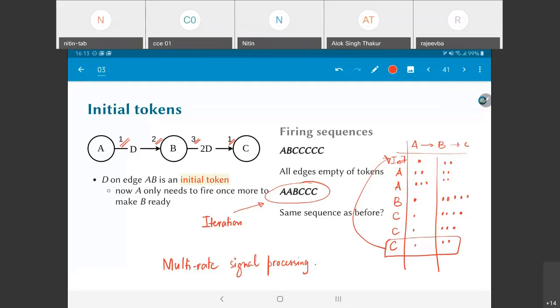This kind of multi-rate data flow graphs were a good way of representing the rate conversions that happen in such a situation.